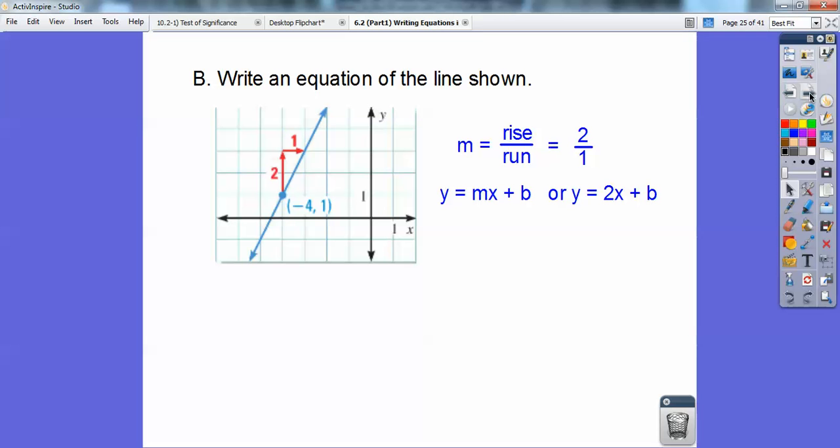Then we're going to just plug in this negative 4 for x and this 1 for y. 2 times negative 4 is negative 8. You're going to add 8 to both sides to get 9. Don't forget to put that in right up there. Y equals 2x plus 9.